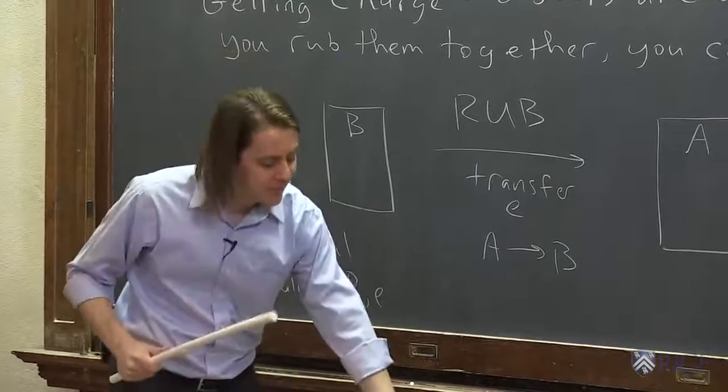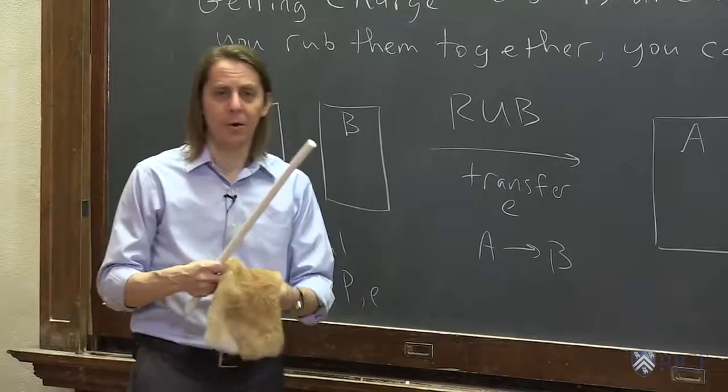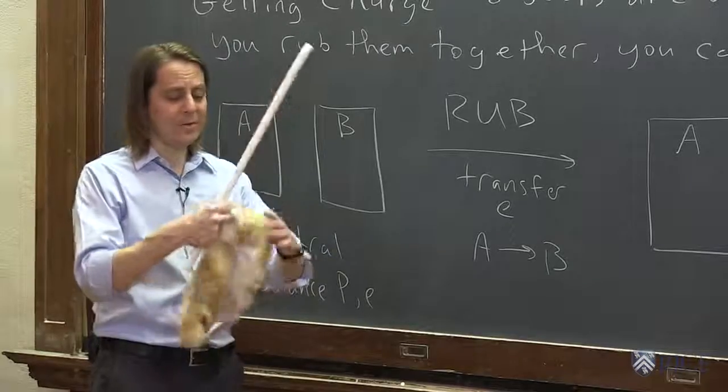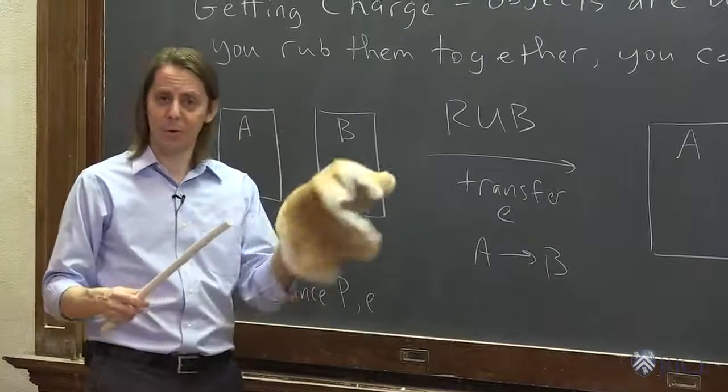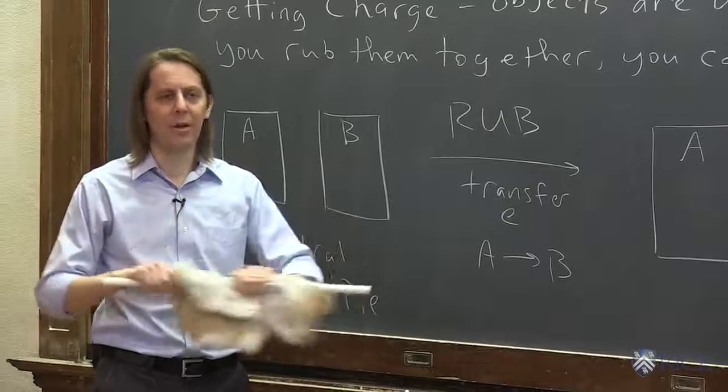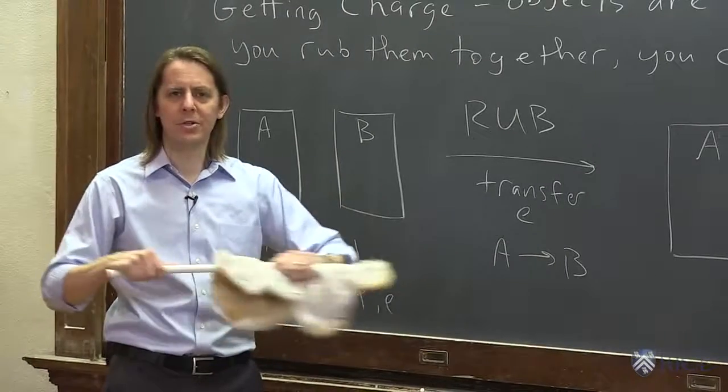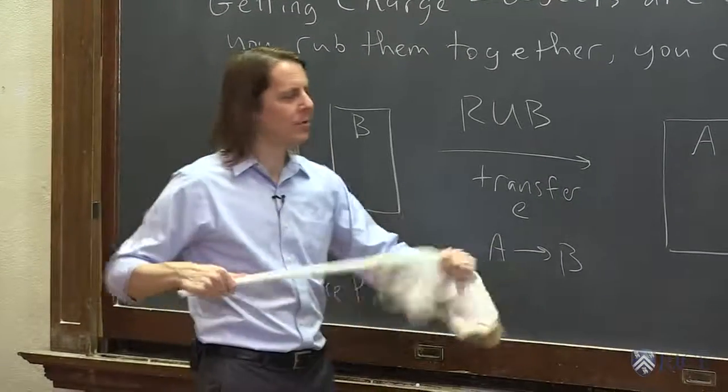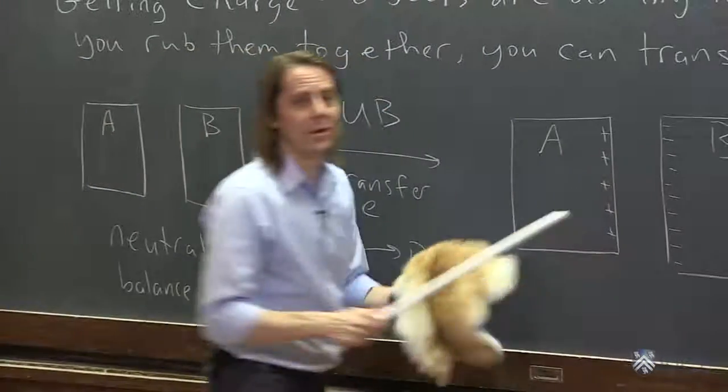Something that loves to give up electrons is fur, so rabbit always seems to be the best. So we got rabbit fur because only the best here at Rice. So if I rub rabbit fur and teflon, I should be transferring charge, and I should be transferring electrons from the fur (in this case A) to the teflon (in this case B).